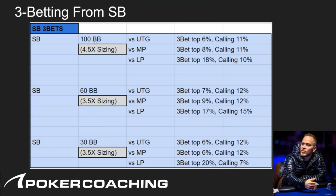Three-betting from the small blind: you'll notice sizing is significantly larger — 4.5x off 100 big blinds, 3.5x off 60 and below. The strategy is also much different. We use linear ranges, meaning we three-bet our best hands and call a section below. Versus UTG we're only three-betting 6% and calling 11%. Versus middle position we're three-betting the top 8% calling 11%. Versus late position we're three-betting 18% and calling 10%.